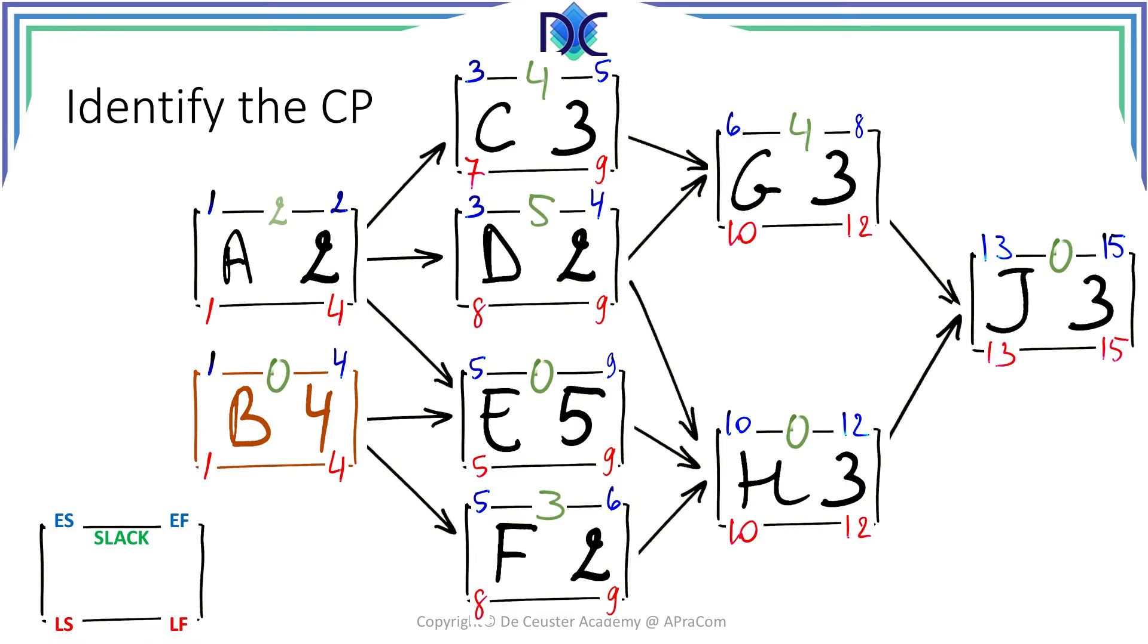The critical path we can start in this case by identifying all activities which have a slack equal to 0. So the first activity with slack equal to 0 is activity B. So the critical path starts at activity B. The next activity with slack equal to 0 is activity E, and we continue with activity H and activity J.